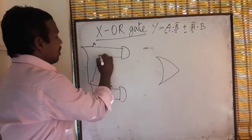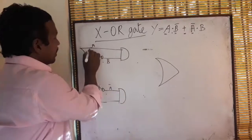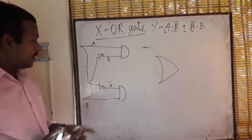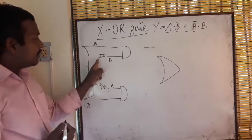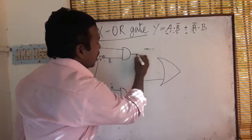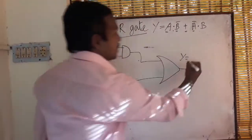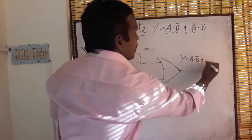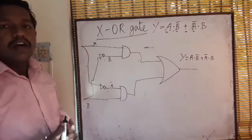So this is going to be Ā. Again, here B I am taking as normal. The same B value I am connecting through one more NOT gate, so this is going to be B̄. Whatever A I give, this gate will take as A but this gate will take as Ā. The same thing for B — this gate takes B but this gate takes B̄. Both outputs I connected to an OR gate. The output Y is equal to A·B̄ + Ā·B. This is the final equation for the XOR gate.